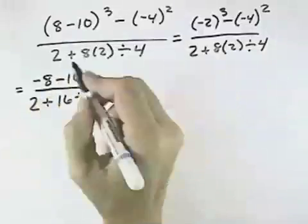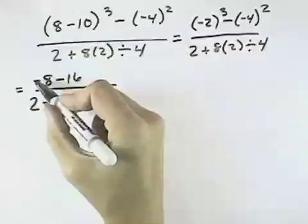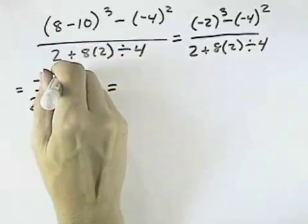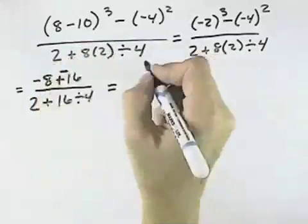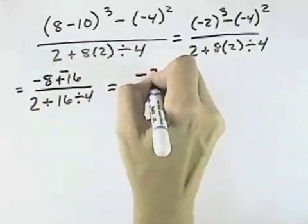In our numerator, there's no more multiplication or division, so we can start adding and subtracting left to right. Negative 8 minus 16 is the same as negative 8 plus negative 16, or negative 24.